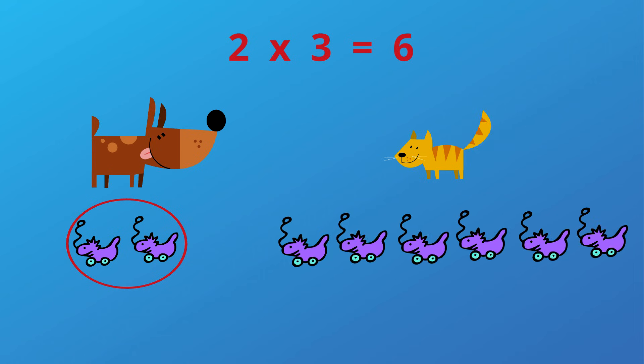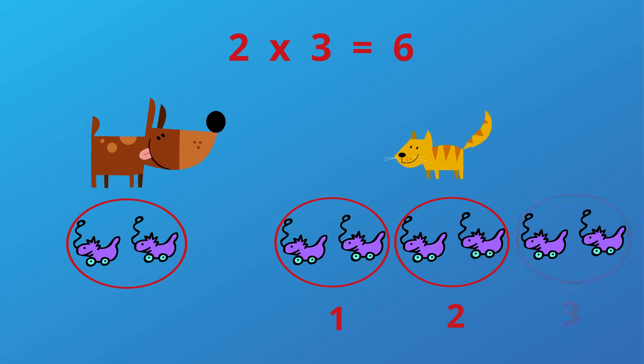Rufus had two toys. Ginger had three times as many. One times, two times, three times. Let's count by twos. Two, four, six. Oh yes, Ginger had six toys.